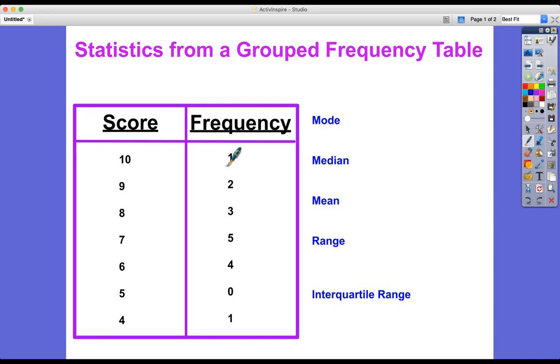So for instance, one person achieved a score of 10, two people achieved a score of 9, and so on, down to one person who achieved the lowest score of 4.